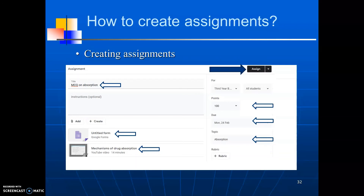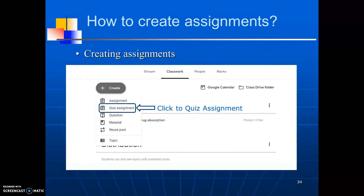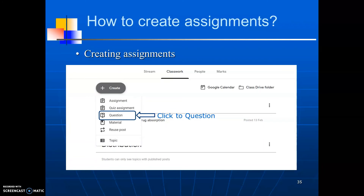We can set the marks from the right side, then the due date, then the topic for the assignment, then click on to assign or you can schedule the assignment. After clicking on to assign, the created assignment will be shown under the specific topic. In this way, you can use the facility of Google Forms to assign work to the students. Alternatively, you can create a quiz by clicking on to quiz assignment in the same way as discussed previously using Google Forms. Another way to assign work to students is by clicking on to question.